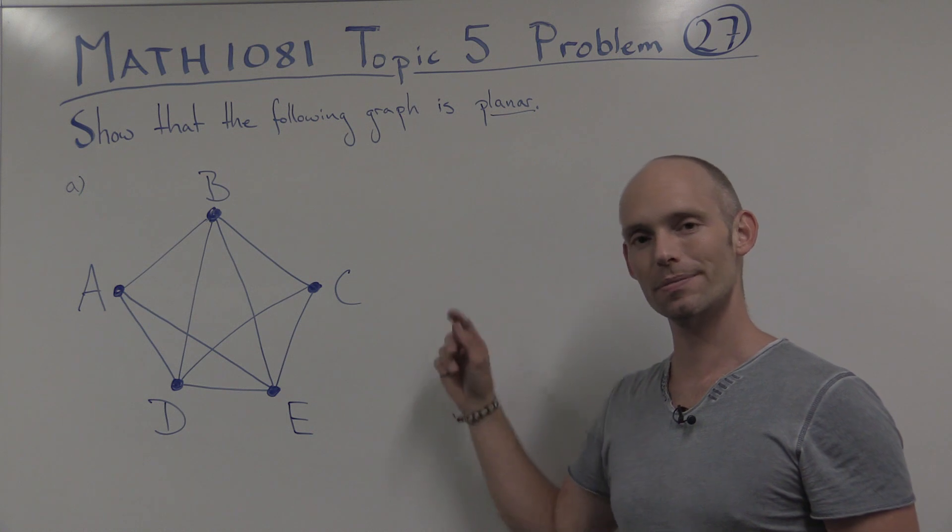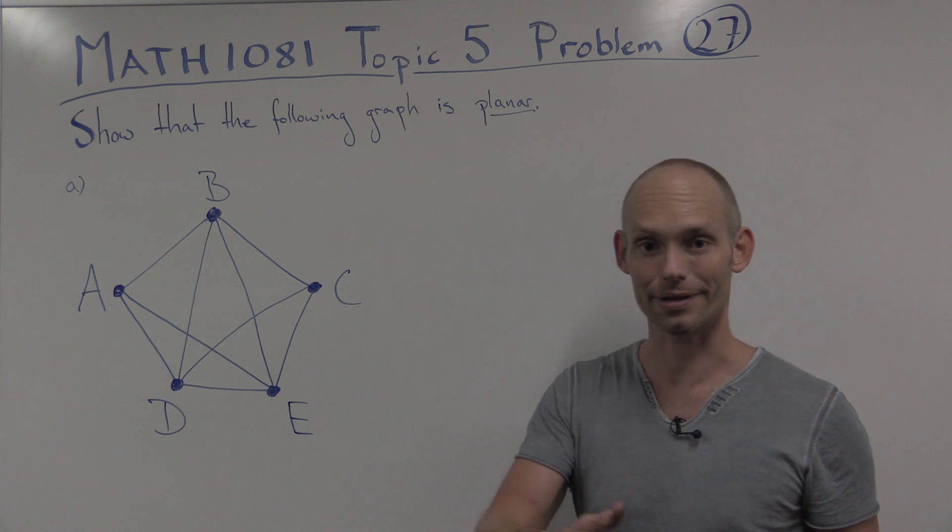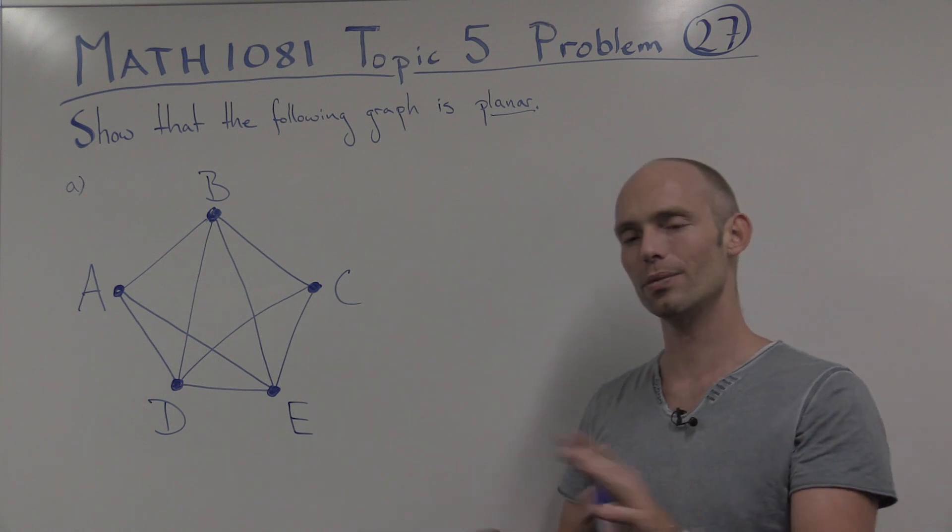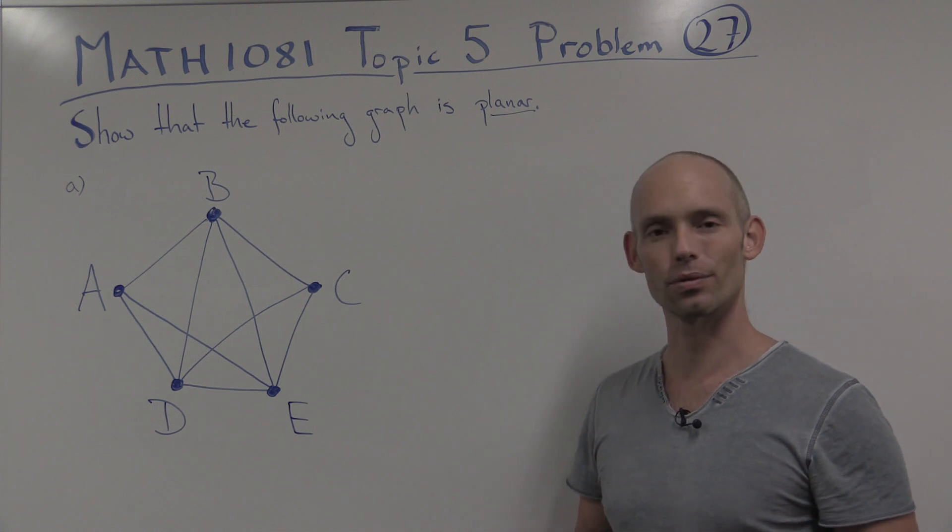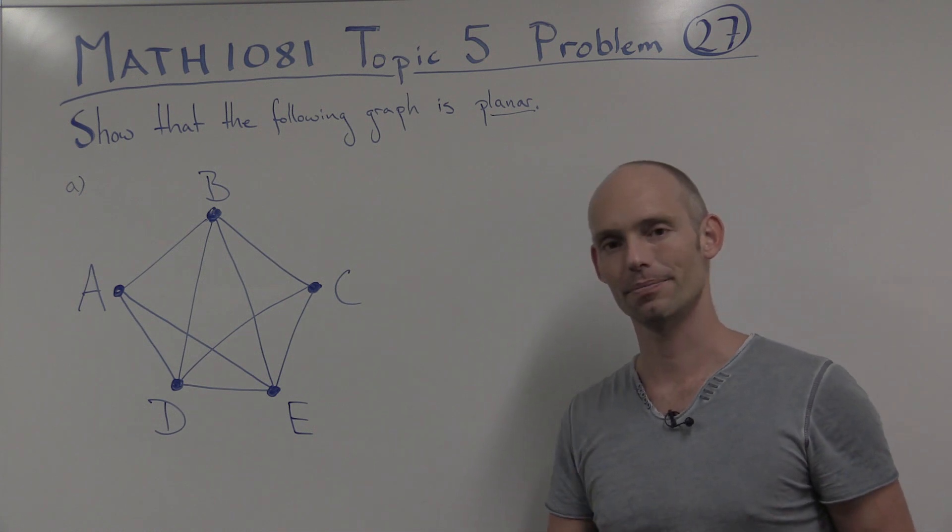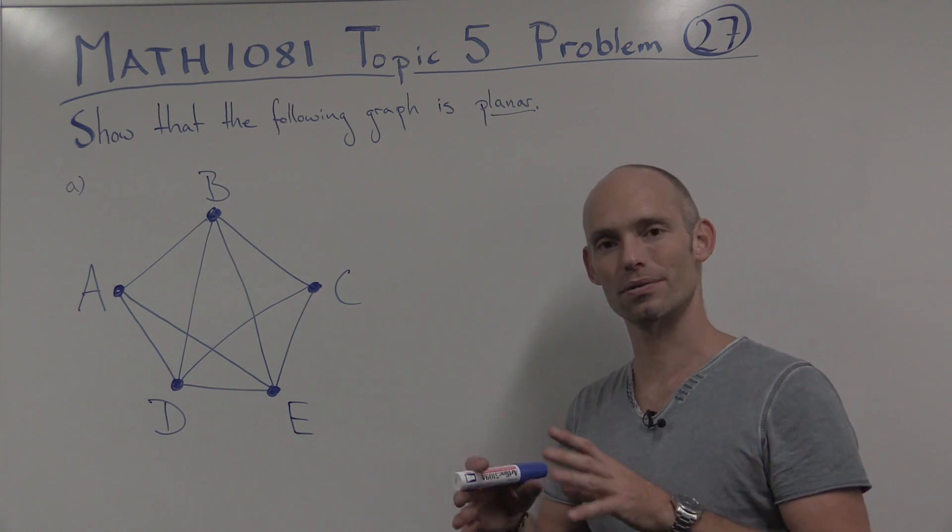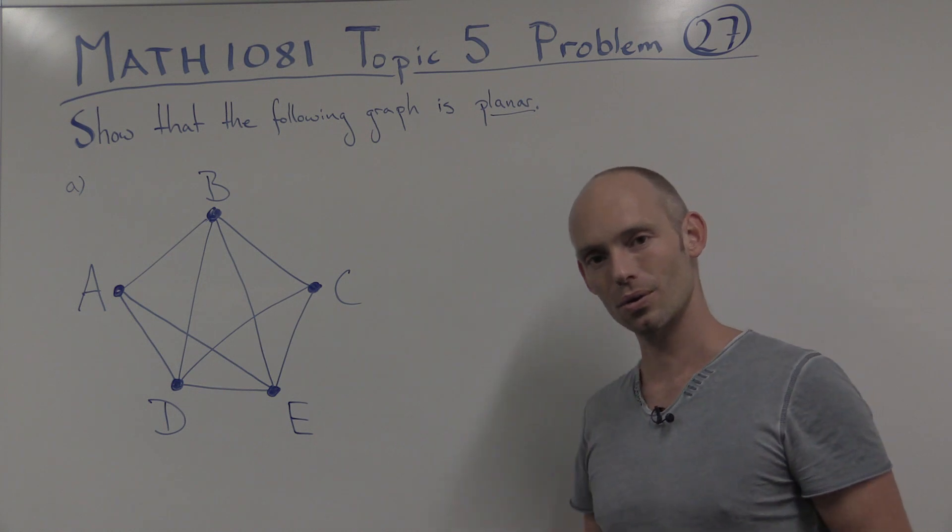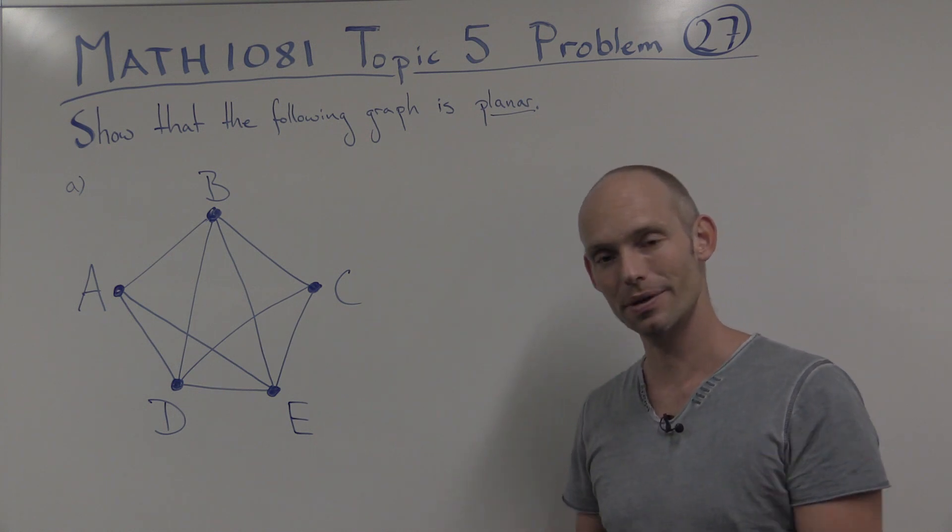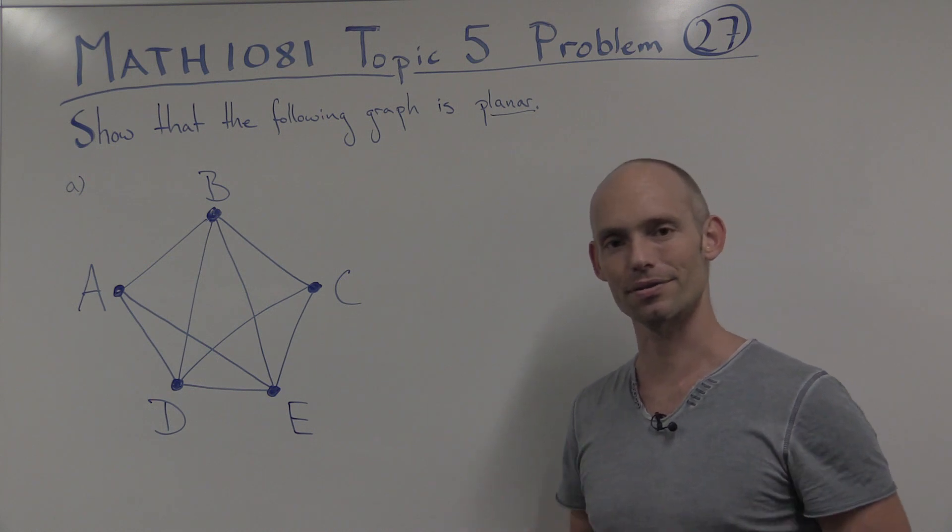The other type of problem that you often encounter about planarity of graphs is that you have to show that a graph is not planar. And then you could try to redraw it and say, oh, we can't do it, whatever. But a better way would be to use Kuratowski's theorem. So we have two different types of problems here. We have to show that a graph is not planar, in which case you could use Kuratowski's theorem, or that a graph is planar, in which case you just redraw it in a planar way, so that none of the edges are crossing.